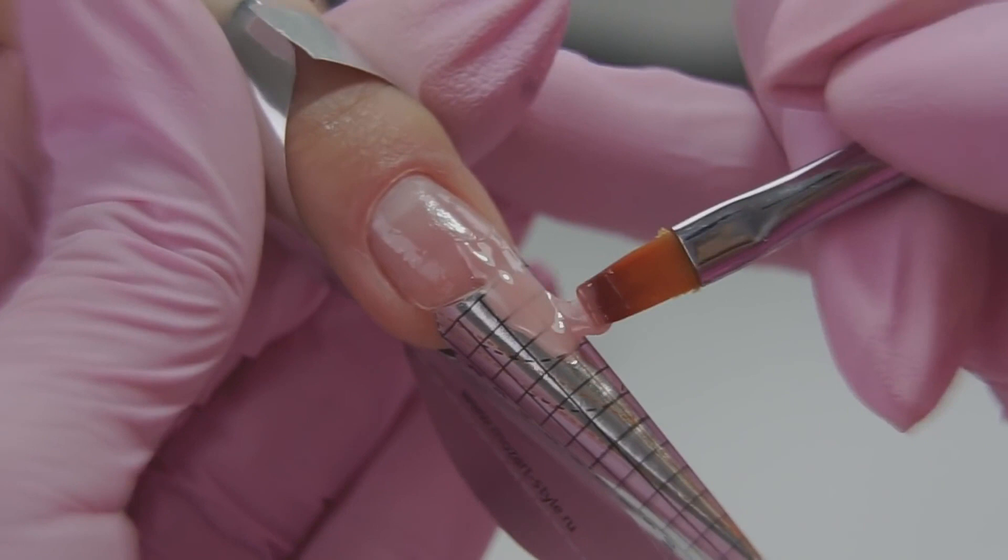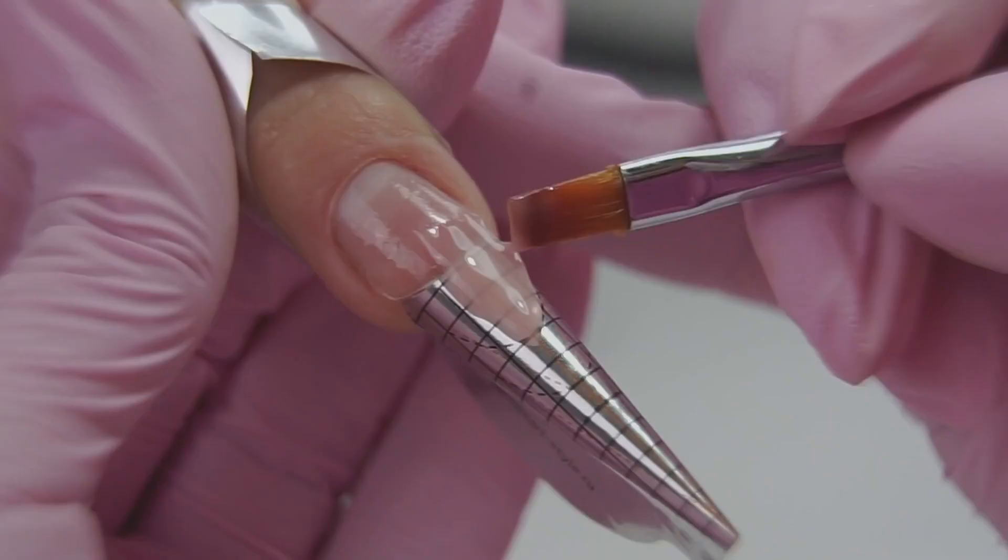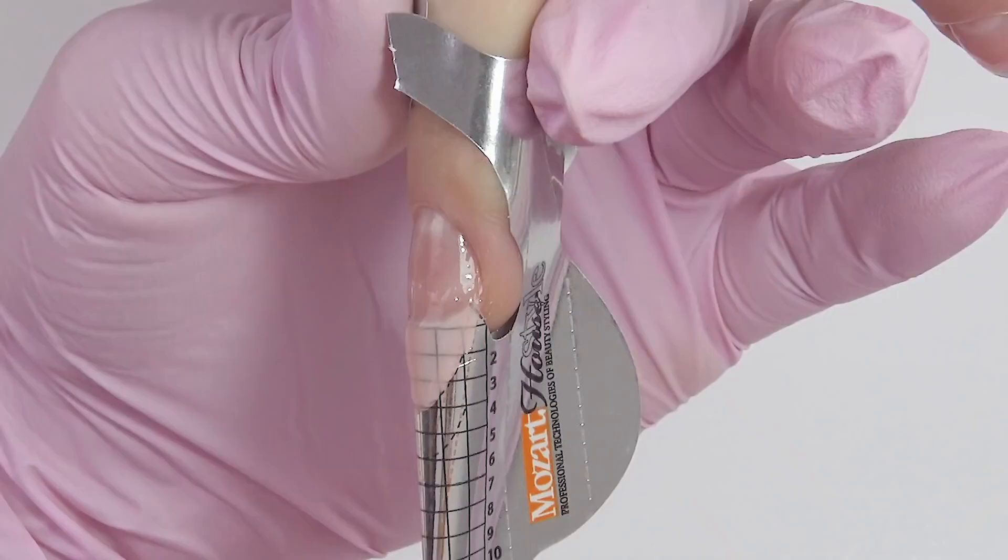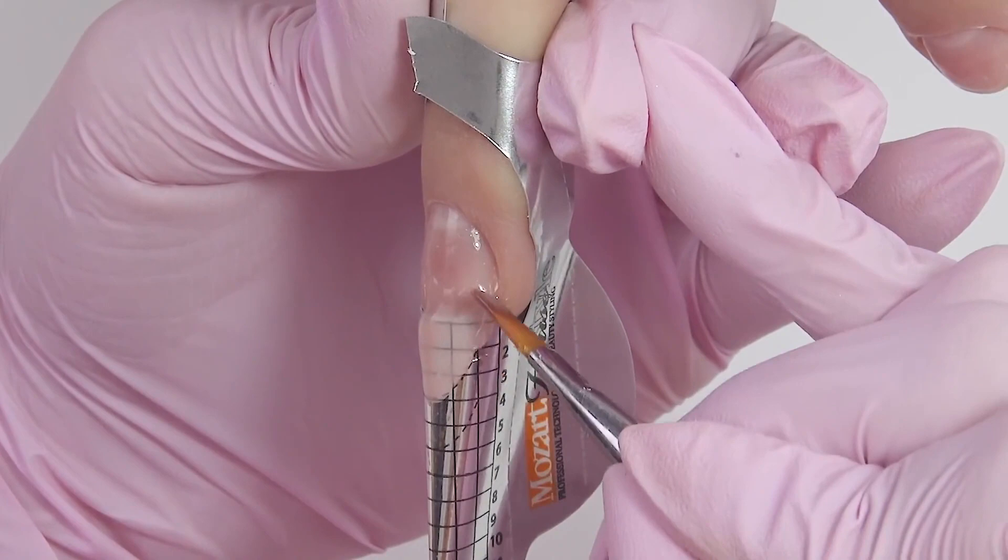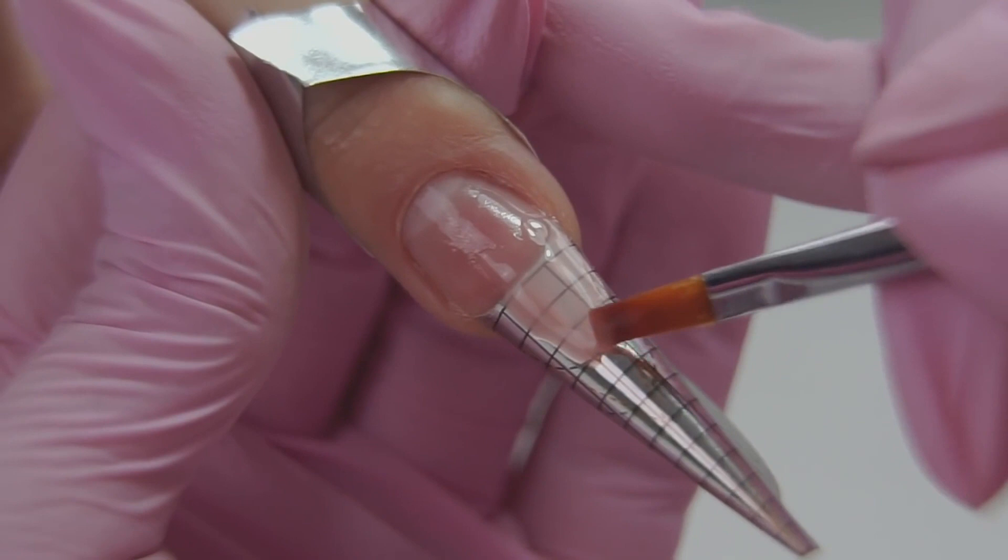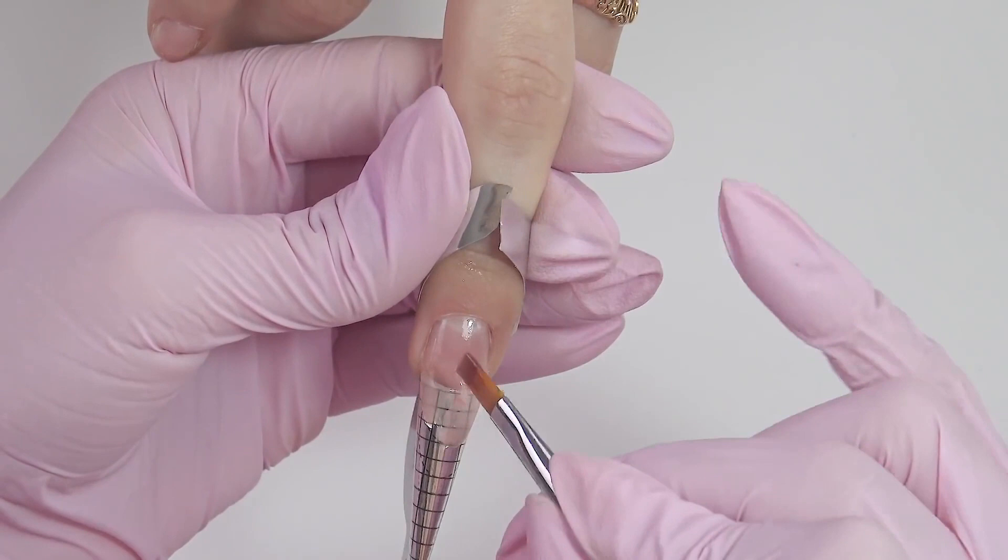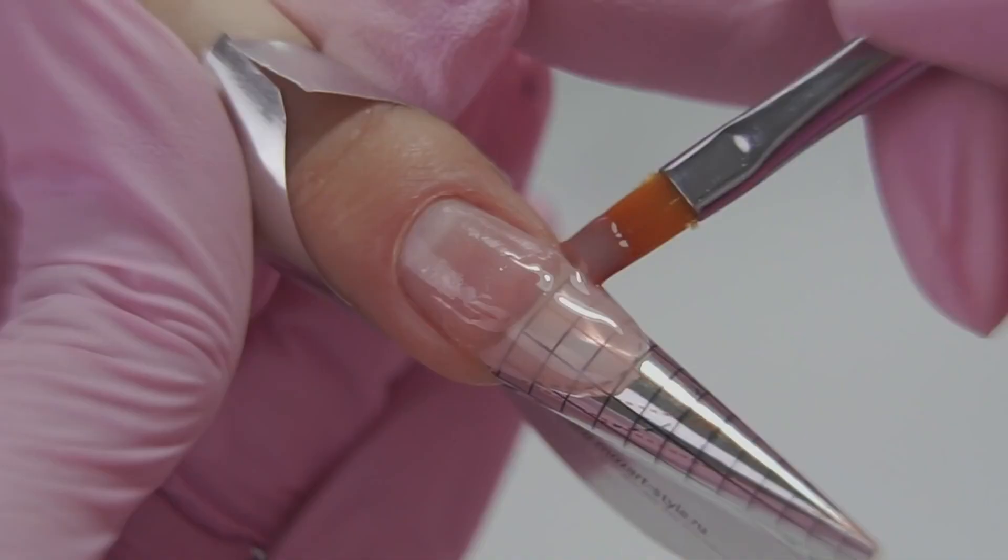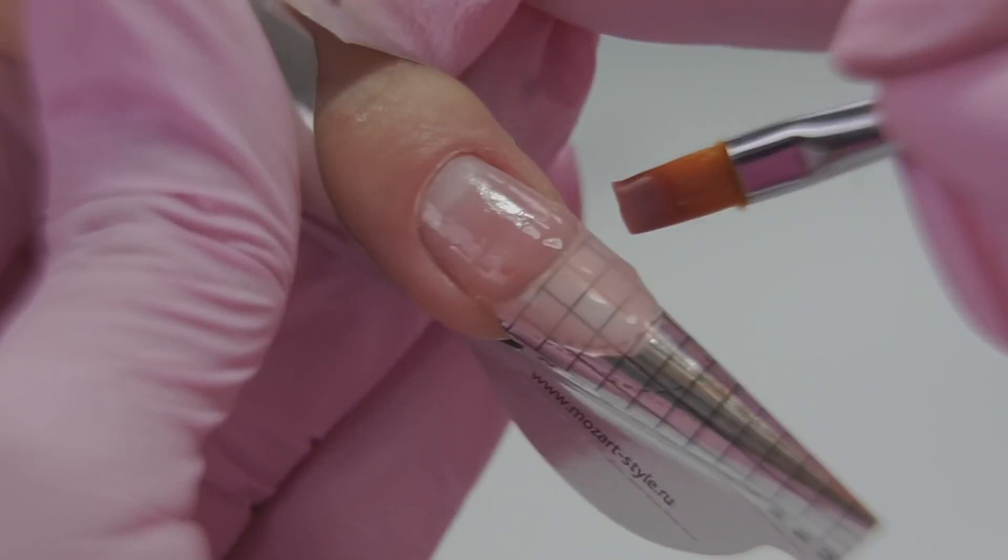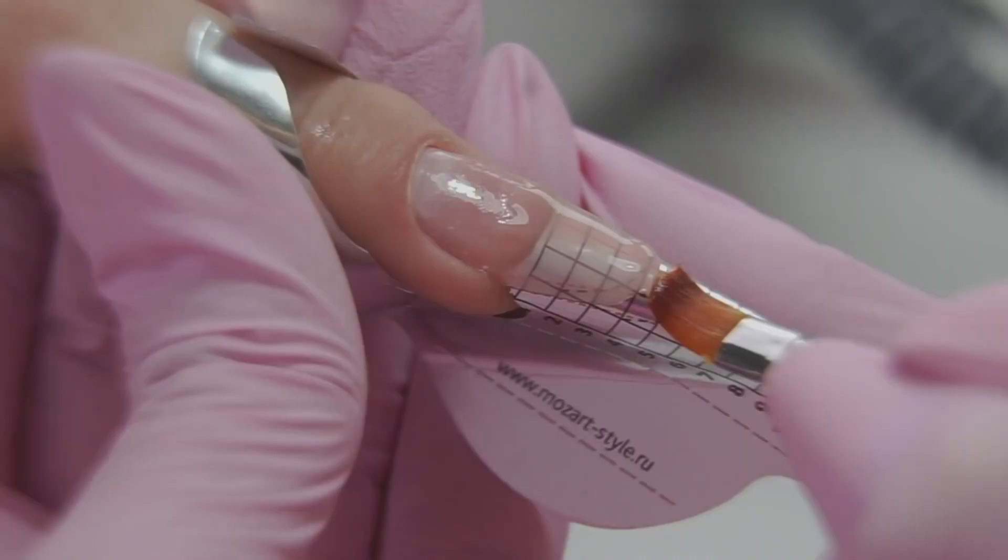I turn the finger to the side and sculpt a proper sidewall. First, there is a straight line and then a smooth ascent to the top. The marks on the form guide us how to do it the right way. I turn the hand to the other side and I lay out the material on the left. If you don't lean on with your pinky finger, the brush will get too deep and you won't get a smooth coating. I'm sculpting a final shape straight away, no extra material. I don't form a square, the free edge should look as if after filing. If you have laid out any excess material, clean the brush and remove it. Cure in the lamp for one minute.